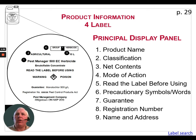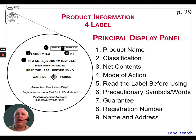On this fictitious label we're looking at Pest Manager 500 EC Herbicide. The name of the product is Pest Manager; the 500 tells us there's 500 grams per liter of active ingredient; EC stands for emulsifiable concentrate, so we know it's a liquid and a herbicide that will control weeds. The second item is the federal classification — in this case, agricultural.